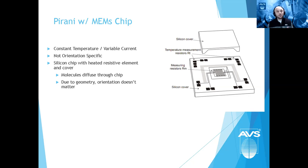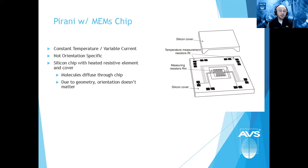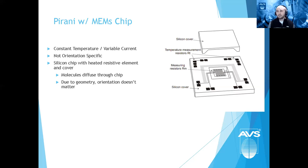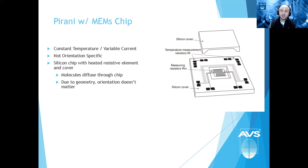Key advantages of the MEMS Pirani: it's not orientation specific and not vibration dependent. Imagine a filament gauge next to a roots blower — the filament vibrates, giving erroneous measurements. With a MEMS chip, that's not an issue. This also makes it easier to mount in hard-to-reach places. The downside is that the increased surface area of the MEMS chip makes it easier to contaminate in processes with condensable vapors.